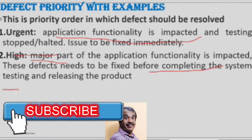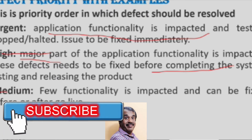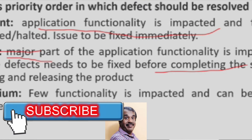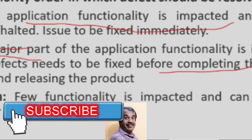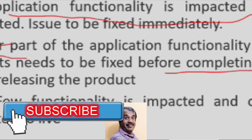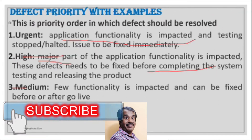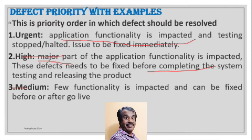The third priority level is Medium, where certain functionalities are getting impacted. These can be fixed before or after go-live based on a decision taken by all the stakeholders.